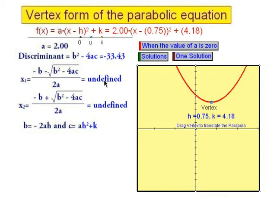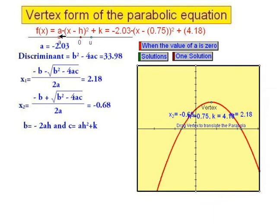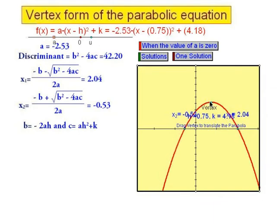If this one is the case where the two imaginary solutions are there and the value of a, you can see, it is a positive number. If I change the value and make it to a negative number, then without moving the vertex, we can still have two real solutions which you can see.